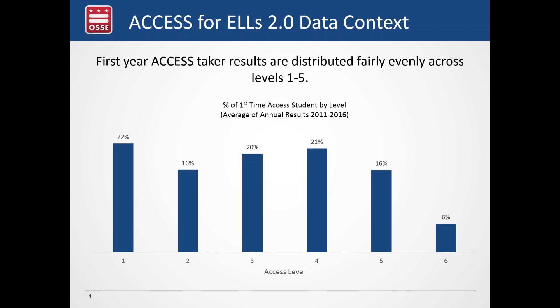Based on our initial analysis, we wanted to see whether students taking ACCESS for the first time fall into the same proficiency levels. We were pleased to find that first-time ACCESS test takers show a good distribution across all ACCESS levels — meaning students aren't automatically clustered in the lowest or highest category. There's a good spread of where kids are starting. I should note that kindergarten is included in this data and looks a little different from the grades 1–12 data.